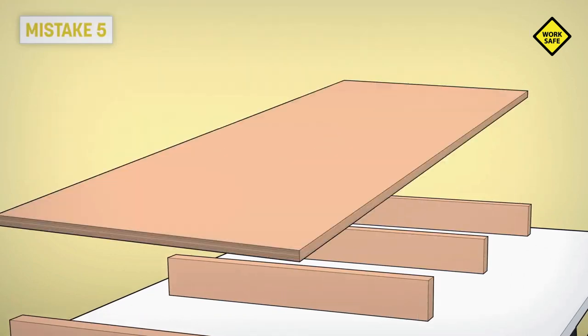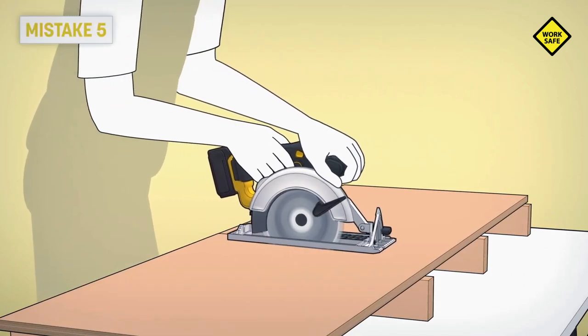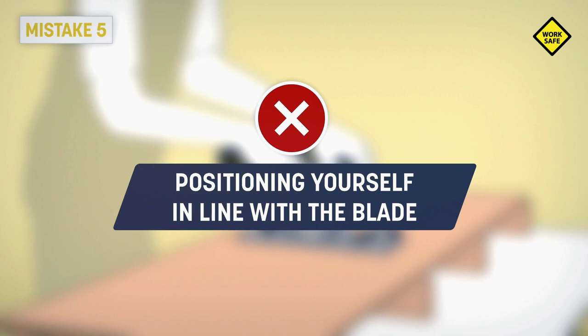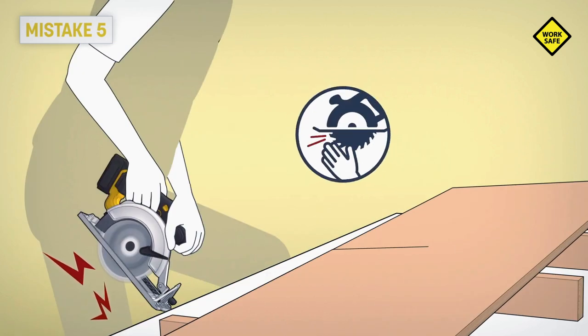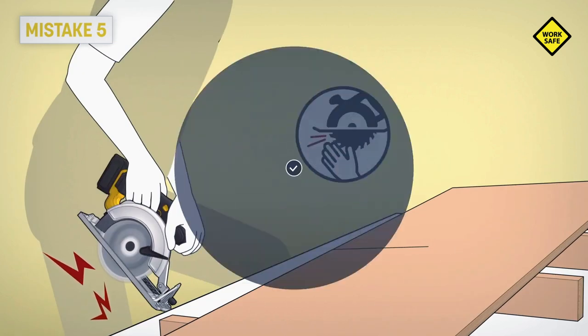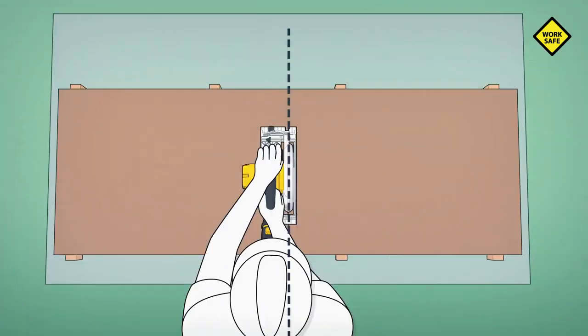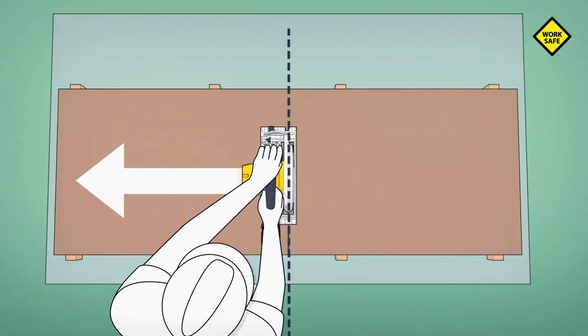Mistake 5: Positioning yourself in line with the blade. It isn't always possible to control kickback forces. That's why you have to position your body on one side of the blade, not in line with it.